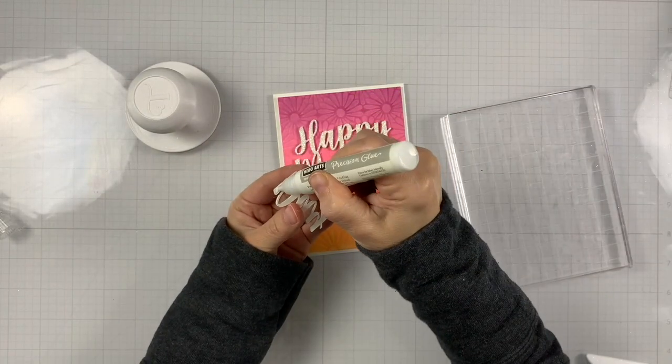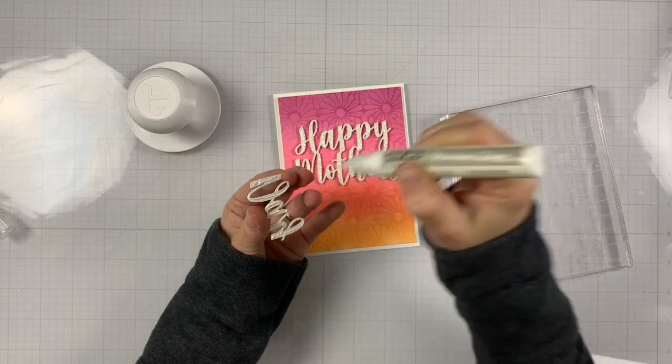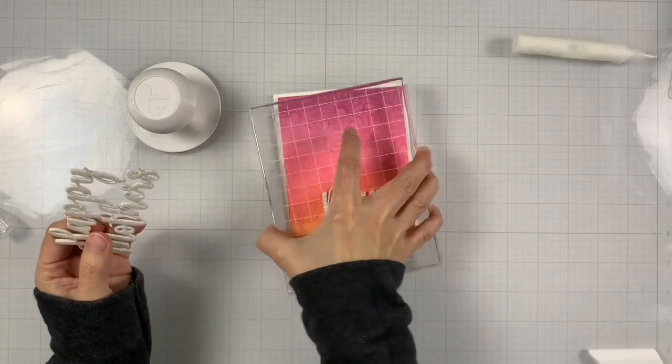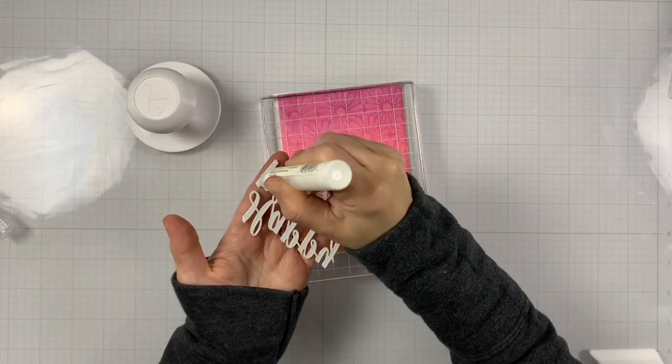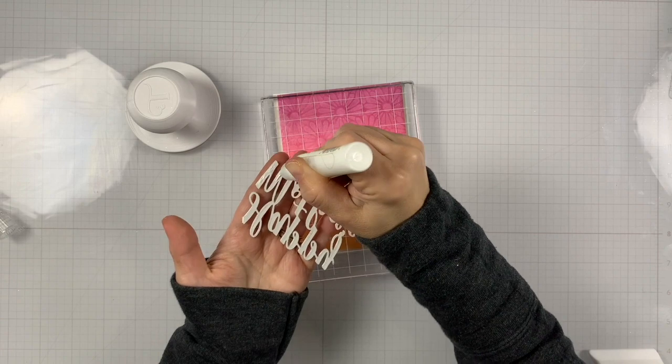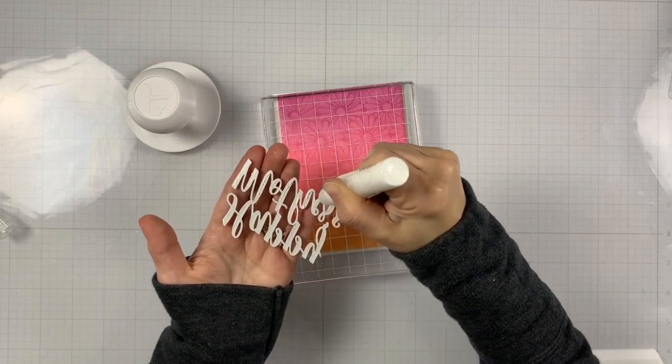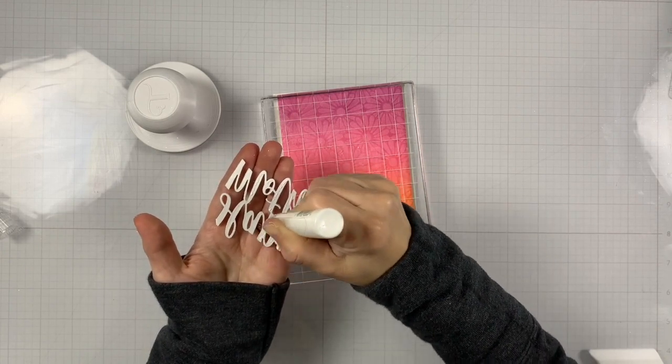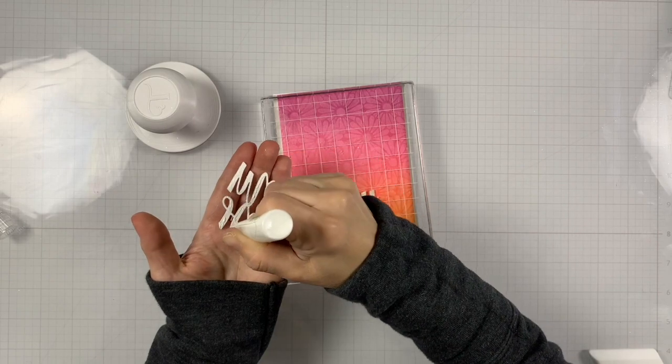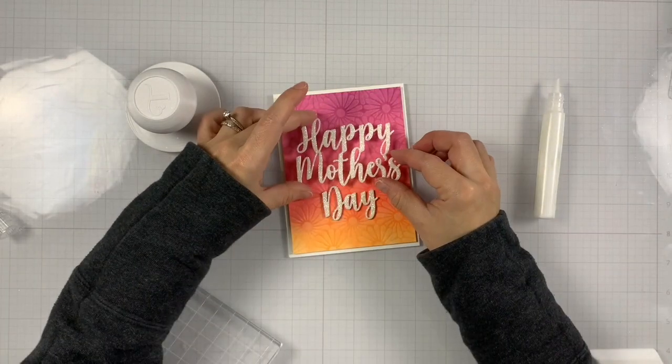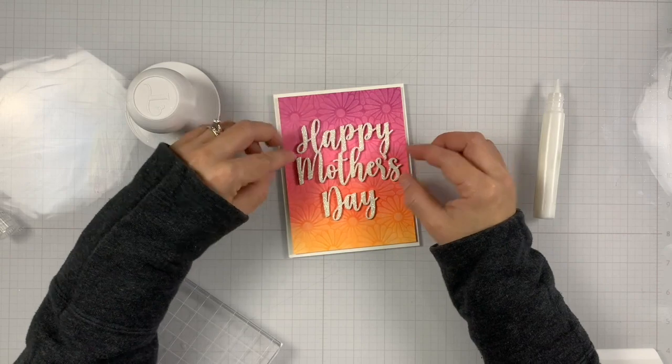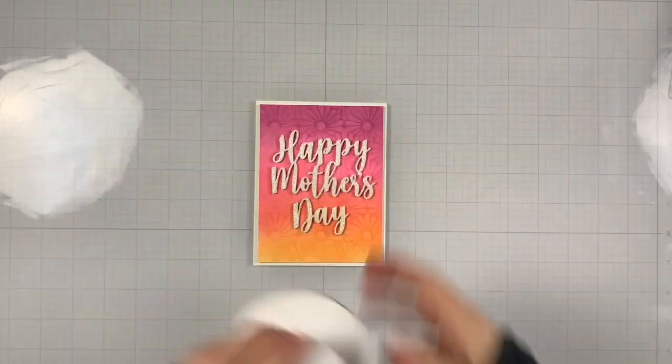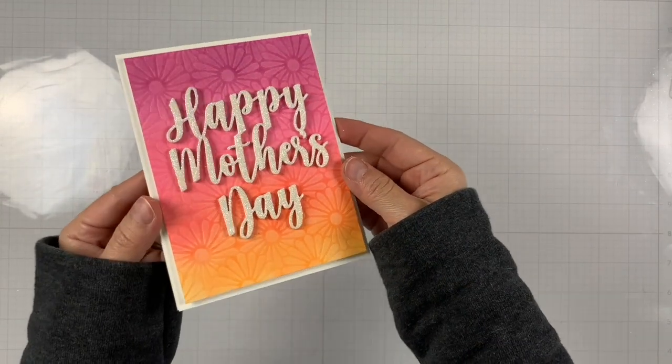I'm trying to decide how I want them positioned. So I think I'm good here. And I'm just adding more the Hero Arts Precision glue on the back of our die cuts and adhering it to our background. Again, as soon as I adhere it, I put it down. I'm adding something heavy. In this case, acrylic block on top to make sure that dries nice and flat. And it stays there because we have texture on our background. So it's very important to have something heavy to make sure that that's adhered nicely.